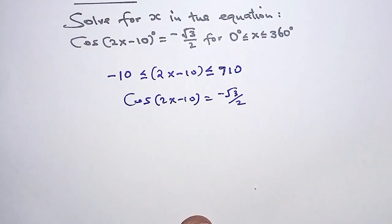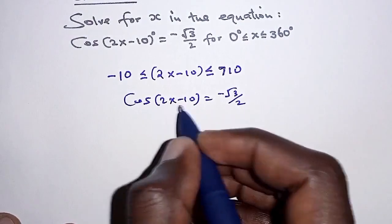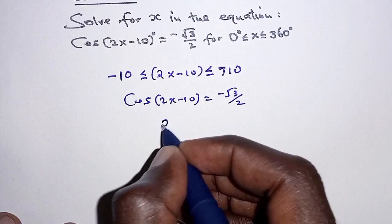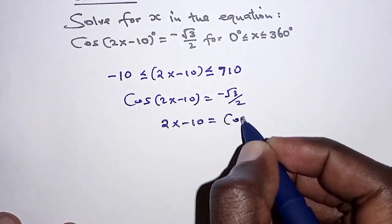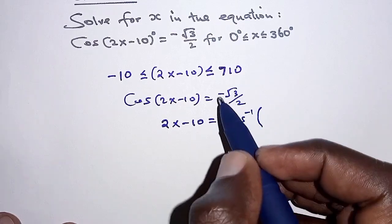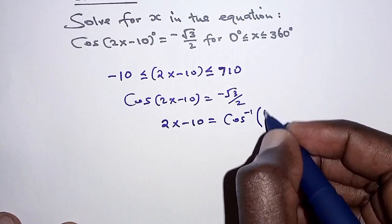Now the first step here is to get the acute angle corresponding to 2x minus 10, so 2x minus 10 should be equal to the cosine inverse of the absolute value of this. So we are going to ignore the negative sign for now and therefore we are going to get the